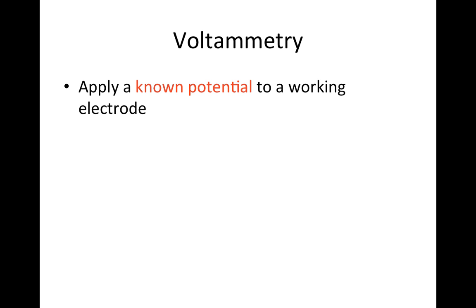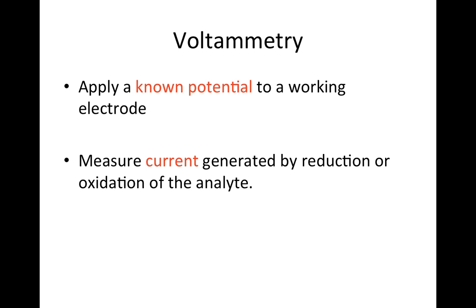Voltammetry experiments consist of applying a known potential to a working electrode, and then measuring the current that's generated when your analyte is either reduced or oxidized at the surface of that electrode.